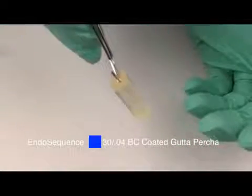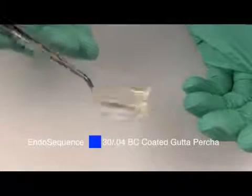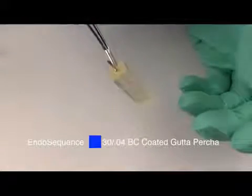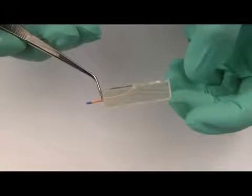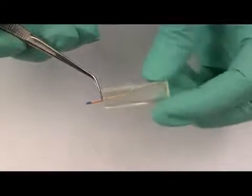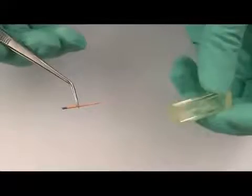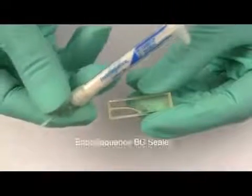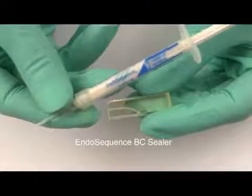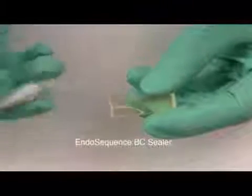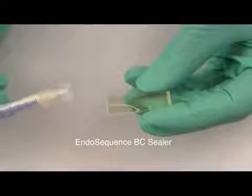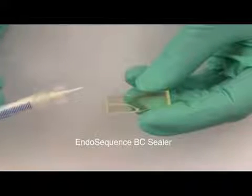Next, I will be coating the master file used, the last file used in the canal. I use a clean file and coat it with sealer. This is EndoSequence BC sealer. It's a bioceramic sealer, zero shrinkage. It actually bonds to dentin through the formation of hydroxyapatite. You also get a bond between the BC sealer and the BC points. This is a room temperature technique.